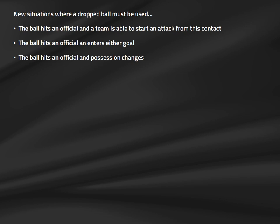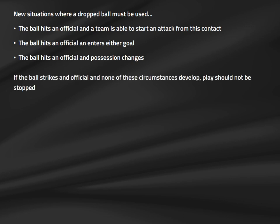For example, if the ball comes off the referee while the defensive team is playing it out of their back and rebounds to another defender — no attack started, ball doesn't enter goal, possession doesn't change — play would not have to be stopped. However, in most situations the contact with the official will impact play significantly, so it's always a safe bet to stop play and conduct a dropped ball when the ball contacts one of the officials.